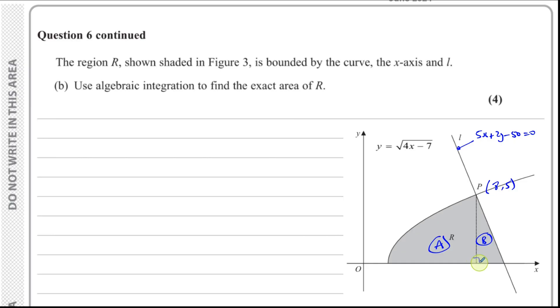Now, area B is just a right-angled triangle. I know this point here is 8, this point here is 5, so the height of this triangle is 5. I can work out what this point here is. When we have 5x plus 2y minus 50 equals 0, and y equals 0, we're left with 5x equals 50. So x equals 10. So this is point 10.